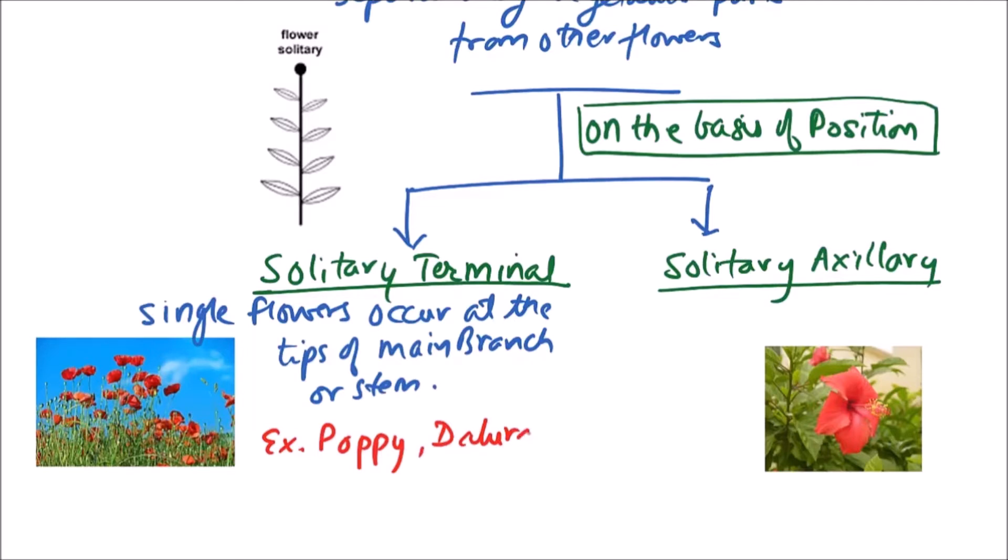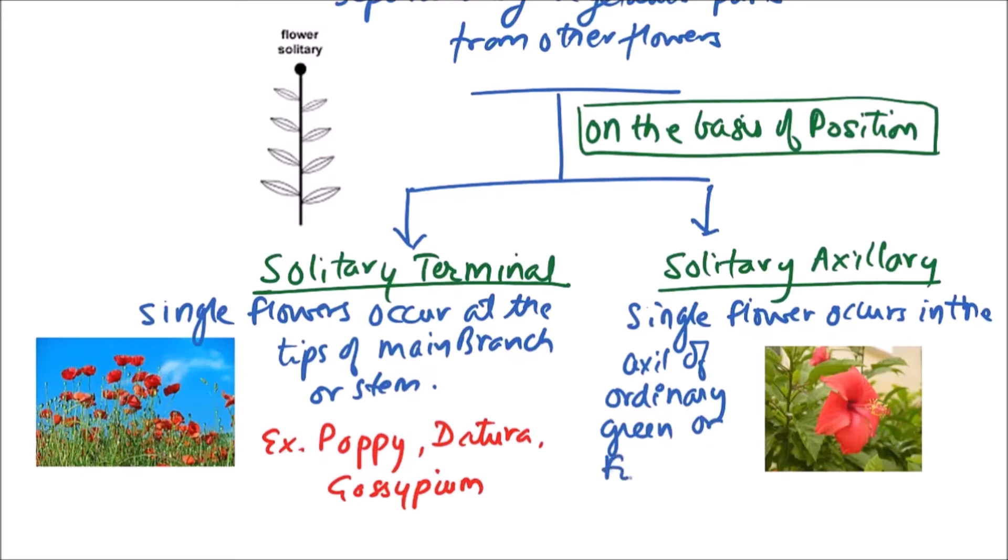While in the solitary axillary flowers, single flower occurs in the axil of ordinary green or foliage leaves. The examples include hibiscus, that is shoe flower, and garden nasturtium.